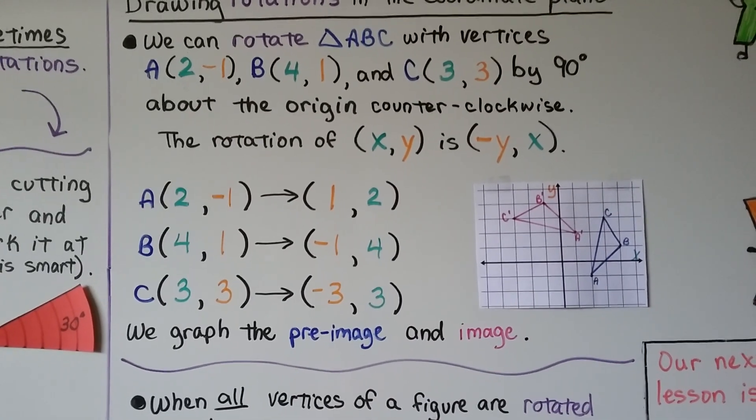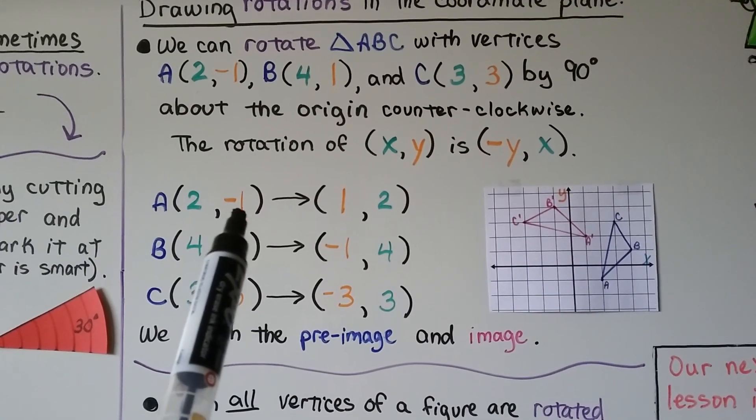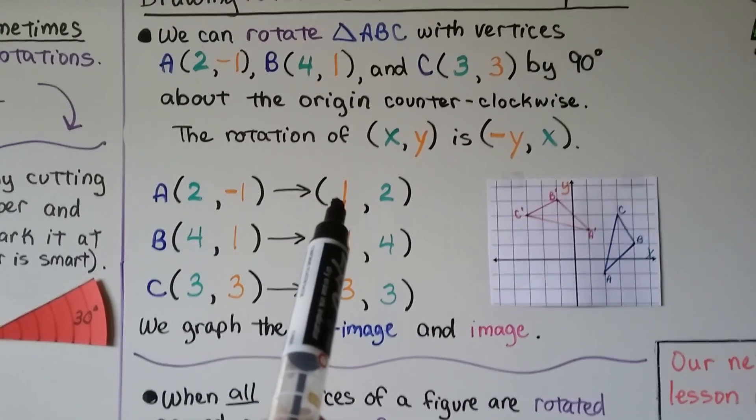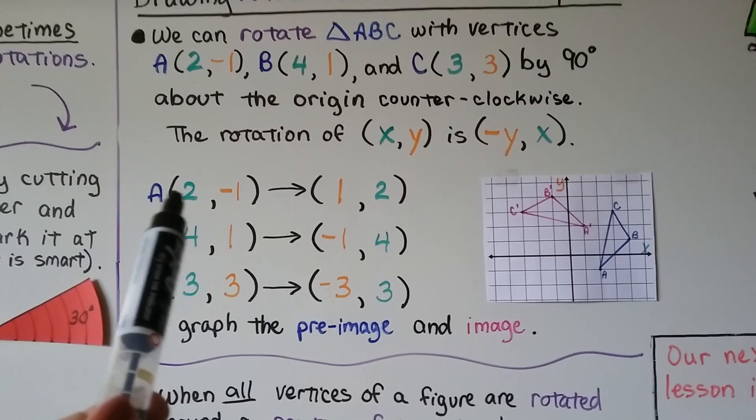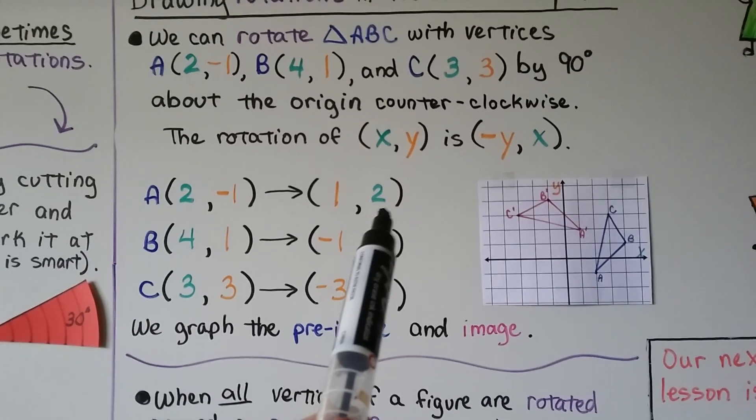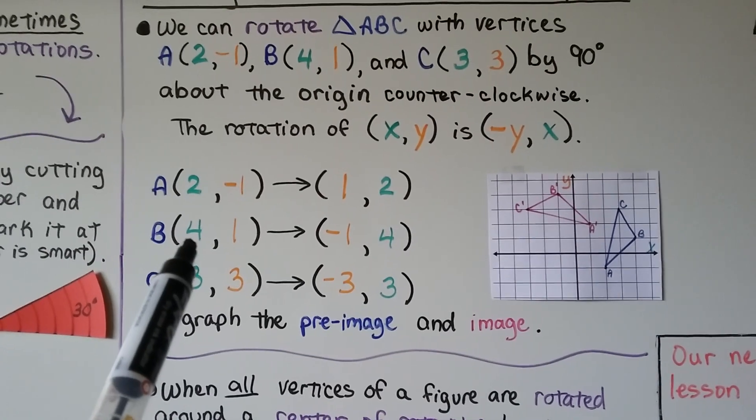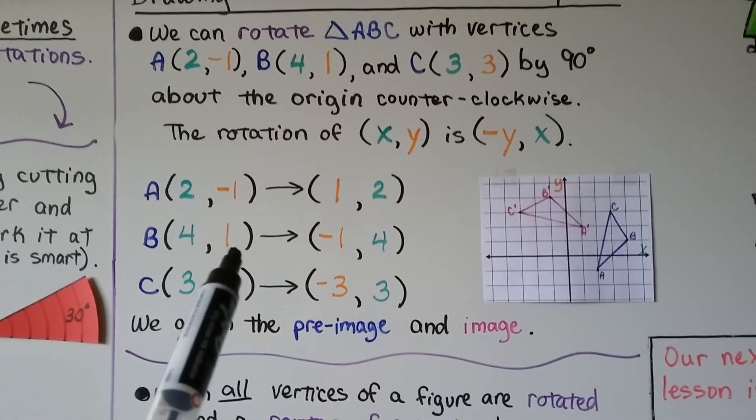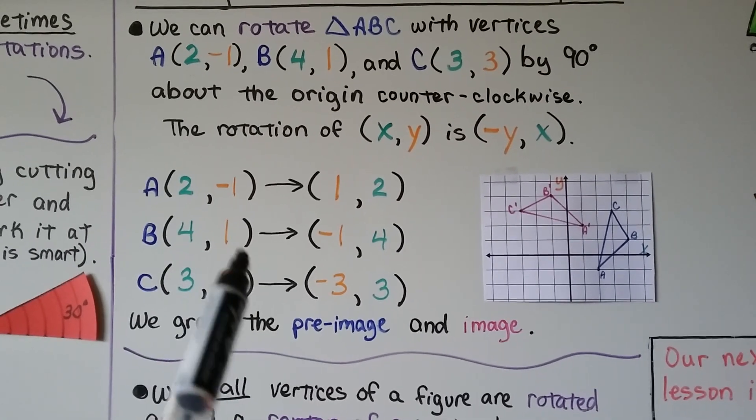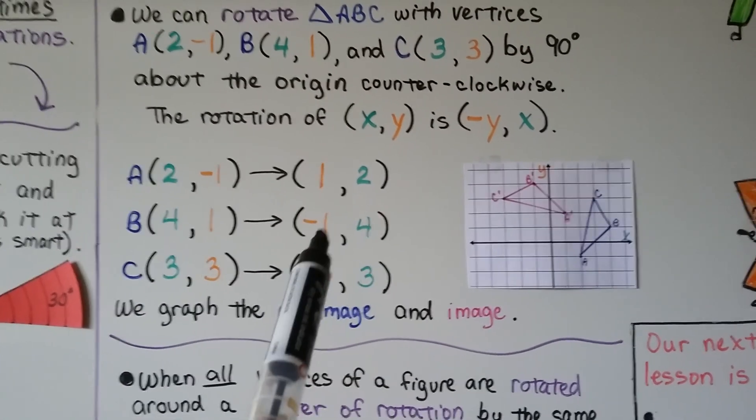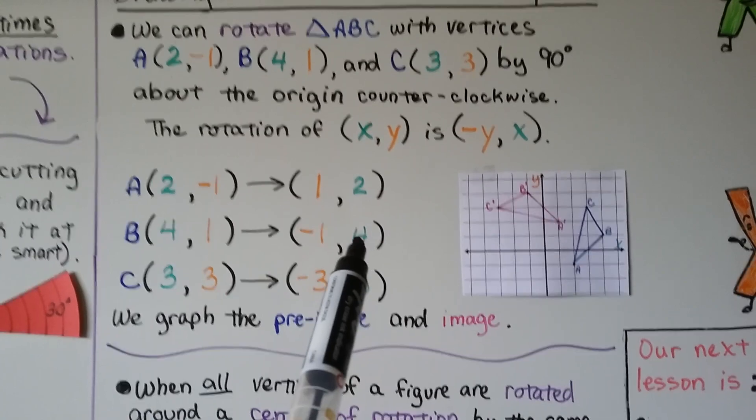So for A, we have a 2, negative 1. Well, this negative 1 is going to go into the x values place as the inverse, so it's going to be a positive 1. And then we take the 2x value and give it to the y. So now we have a 1, 2. Do the same thing for B. We've got a 4 and a 1. The inverse of this positive 1 is a negative 1. And we put the x values over here, so now we have negative 1 for x and 4 for y.